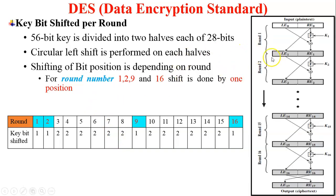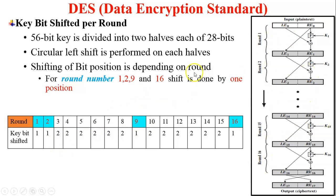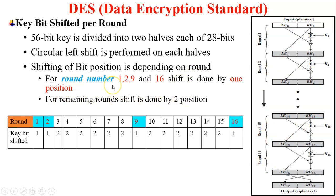Now what is a round? In round 1, the key bit is shifted by 1 bit position left shift. In round 2, it performs again 1 bit left shift. From rounds 3, 4, 5, 6 up to 8, it performs a 2-bit left shift. For remaining rounds, the shift is done by 2 positions — a 2-bit left shift.